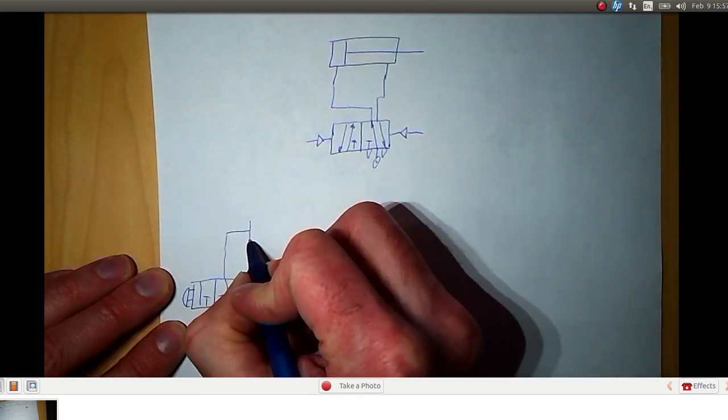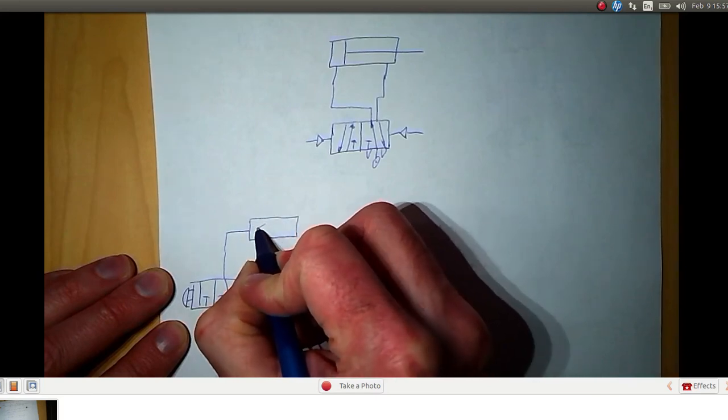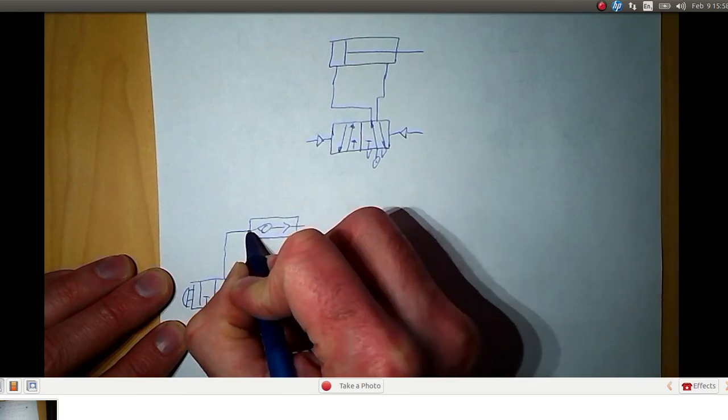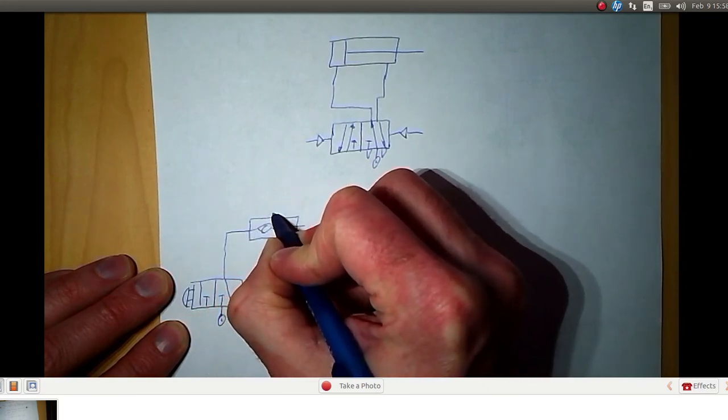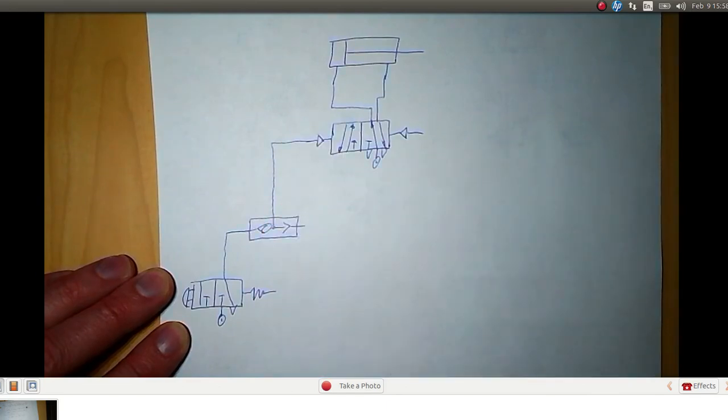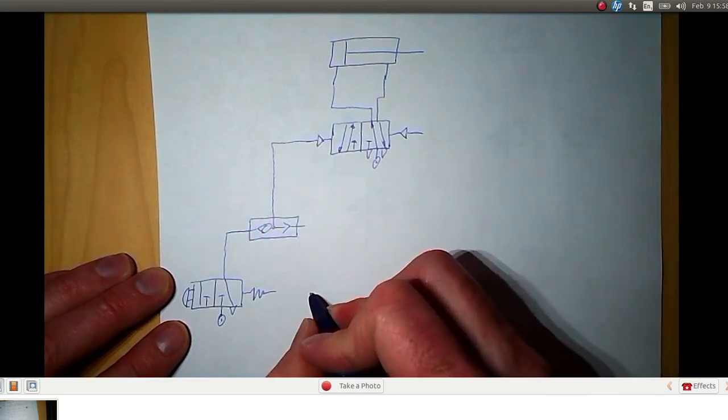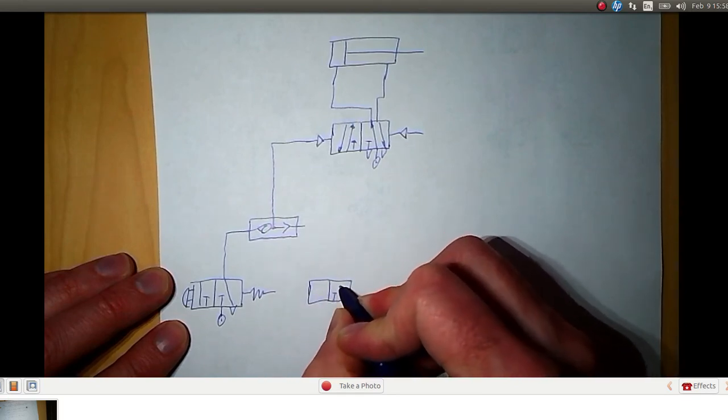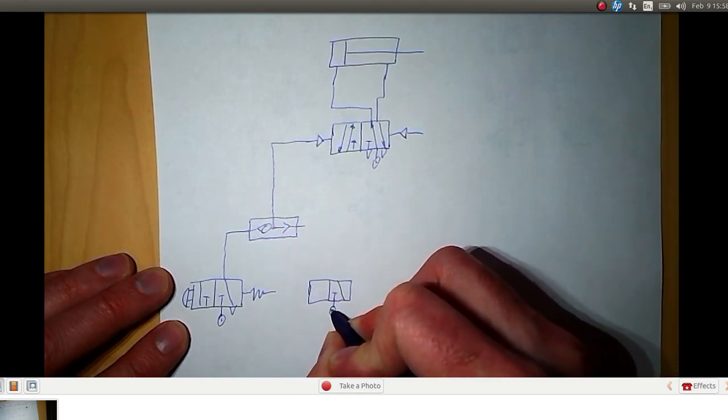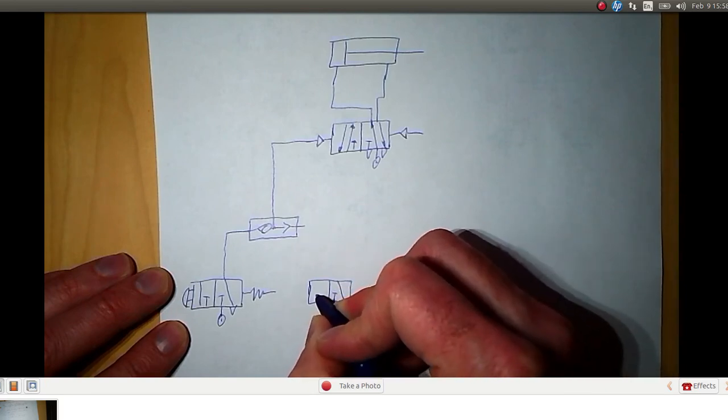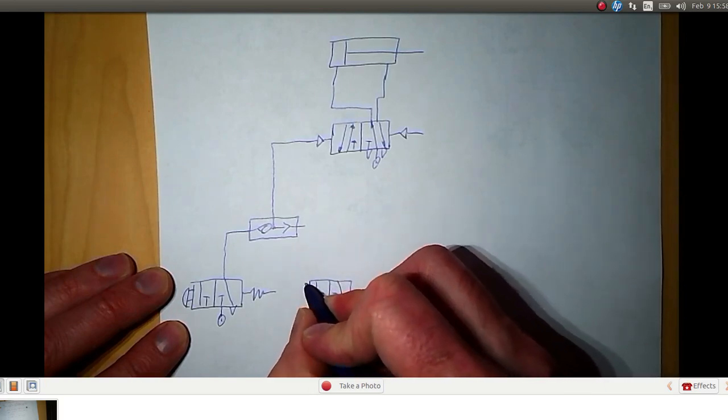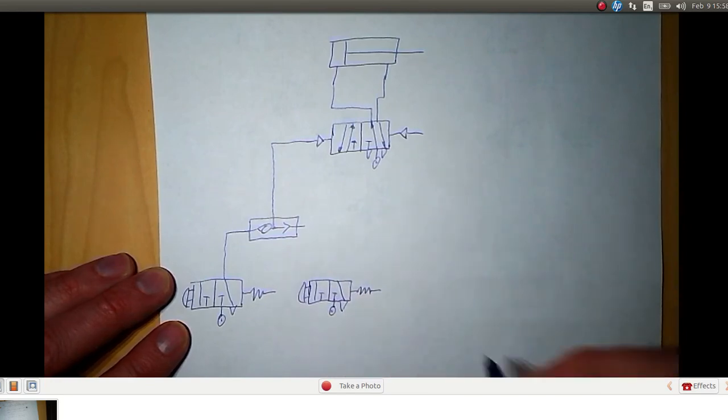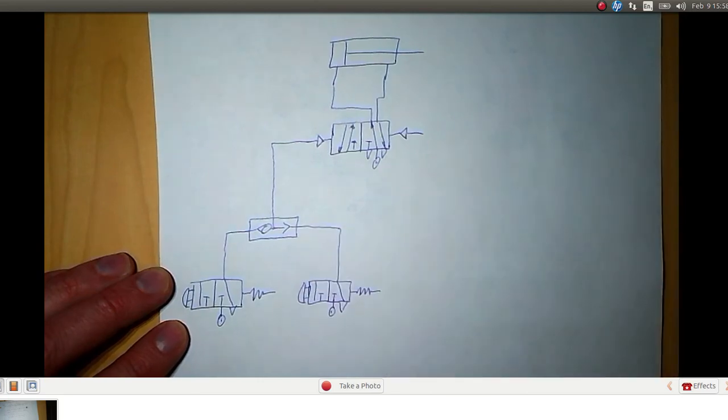So how do we get it to change positions? We have a choice of two buttons. So for this pilot operated valve, we're going to have two push button actuated valves to supply pressure up here. These are just 3-2 valves with a spring return and a push button actuator. And since we have the choice of two, we're going to have an OR. And that will supply pressure to our pilot operated valve.